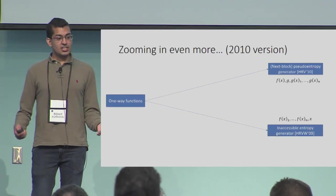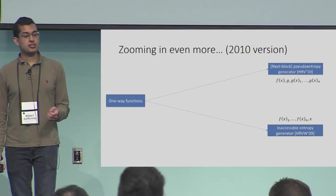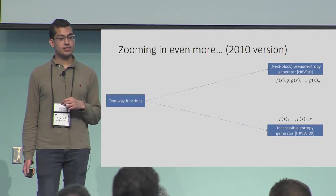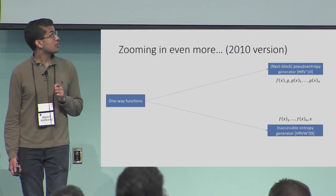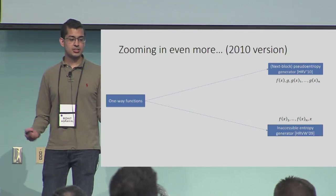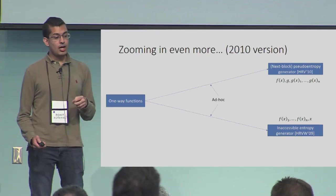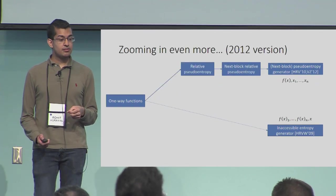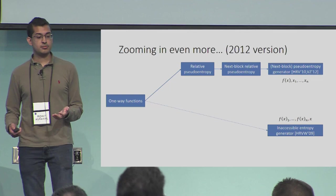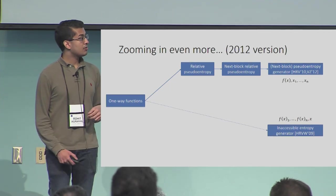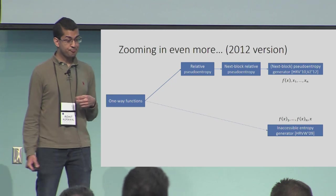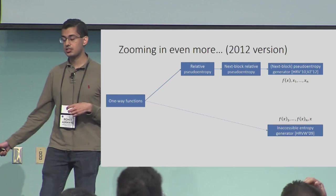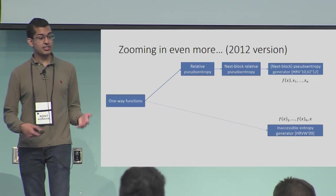If we zoom in further and look at the constructions of these computational entropy generators: in 2010, the best works of Heitner, Rheingold, and Vadhan in the pseudo-entropy case and still the same inaccessible entropy generator show that the constructions are somewhat similar, but the techniques are quite different and ad hoc. Then in 2012, Vadhan and Zheng, in work with the best known pseudorandom generator construction from one-way functions, introduced a new notion of relative pseudo-entropy that allowed them to both simplify the construction, making it essentially the same as the inaccessible entropy construction, and give a simpler, tighter proof.